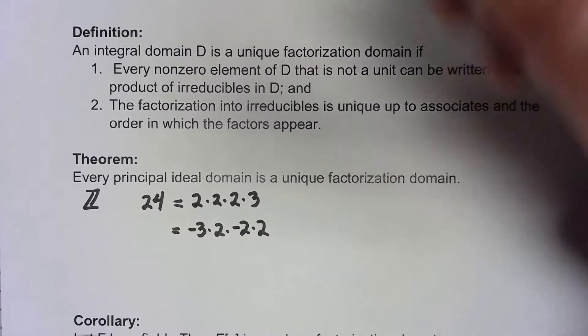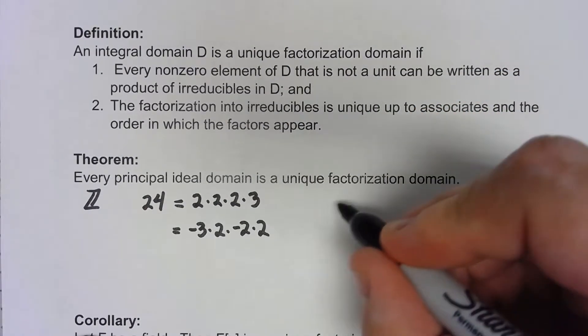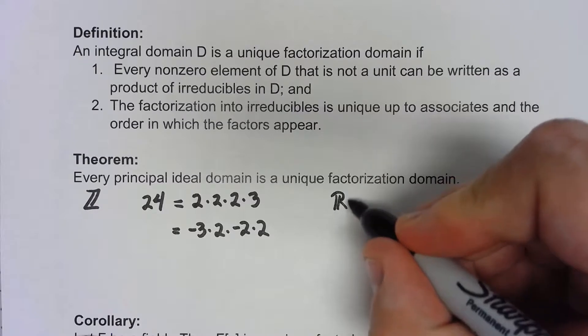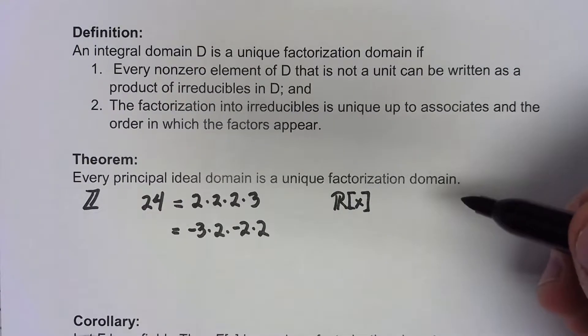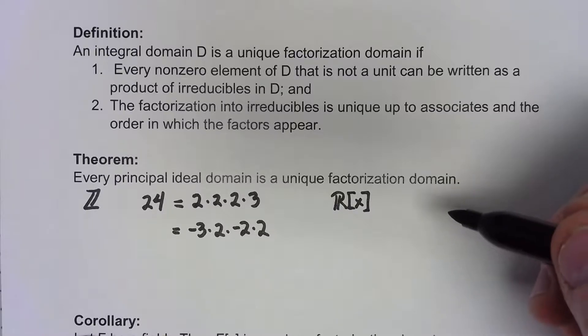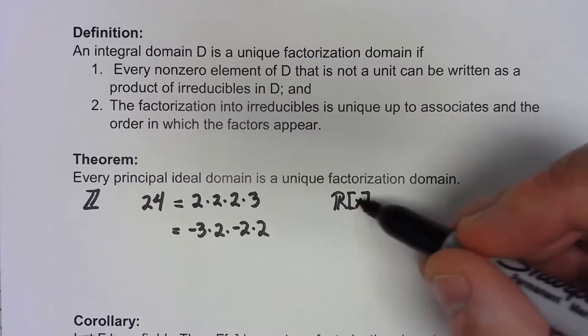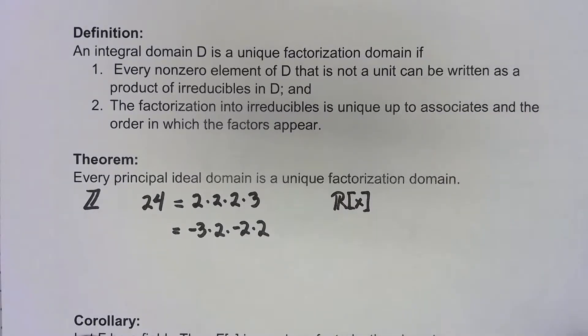Similarly if I have something like R[x], that's going to be a unique factorization domain. Again that goes back to really all the stuff we were doing in the previous chapter.